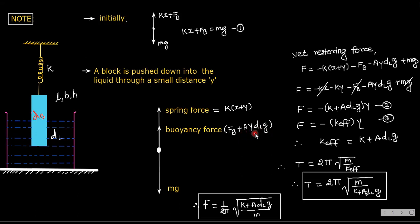This is the extra buoyant force due to y dipping; mg is downward. Now net restoring force will be: minus [k(x+y) + fb + A·y·dl·g] plus mg. Expanding: minus kx minus ky minus fb minus A·y·dl·g plus mg. Since we already know kx + fb equals mg, those terms cancel. What's left is minus ky minus A·y·dl·g. Taking y common from these two terms gives minus (k + A·dl·g)·y, which we can write as minus k_effective into y.